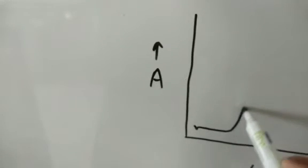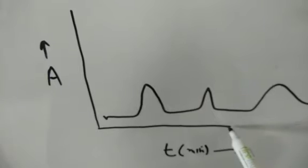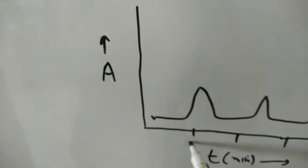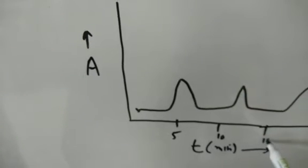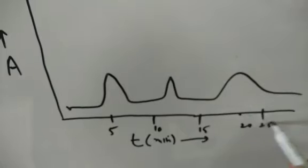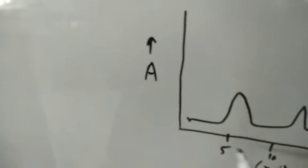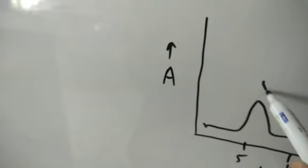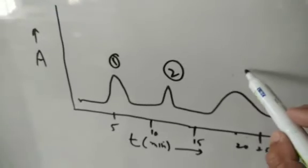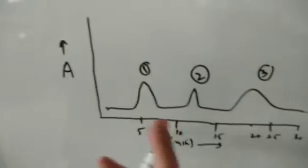So for example, at time periods of 5, 10, 15, 20, 25, and 30 minutes, we get peaks at different retention times. Peak number one comes at retention time 5, then peak two and peak three follow. This graph is our output from the instrument — the chromatogram — and now we have the data to assess column efficiency.